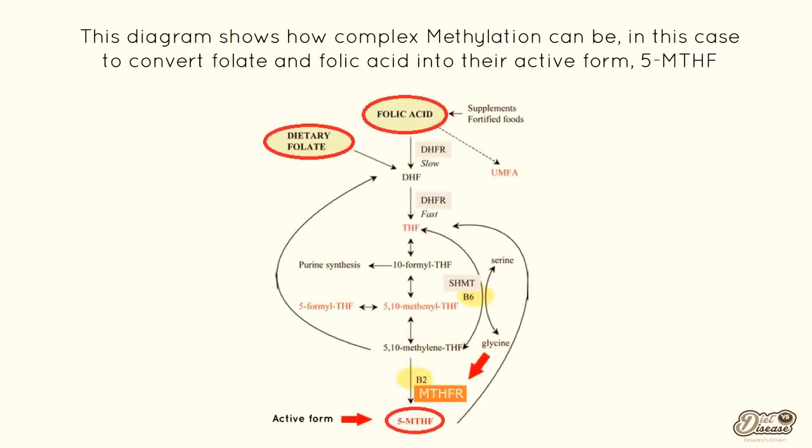This diagram shows how complex methylation can be — in this case to convert folate and folic acid into their active form, which is called 5-MTHF for short. You can see at the top of the diagram is folic acid and dietary folate, this is the methylation cycle, and at the very bottom is the active form. Just above the active form you can see MTHFR, which is the enzyme required for that last step.